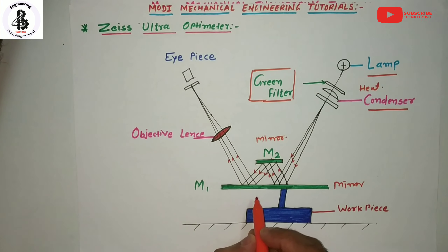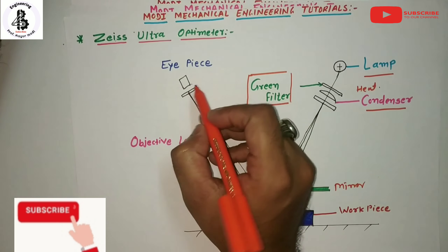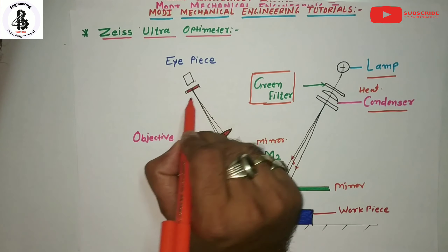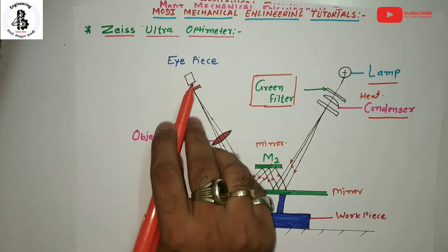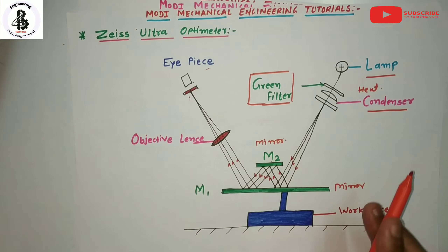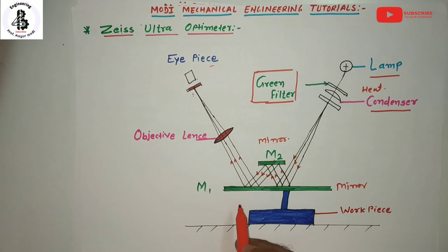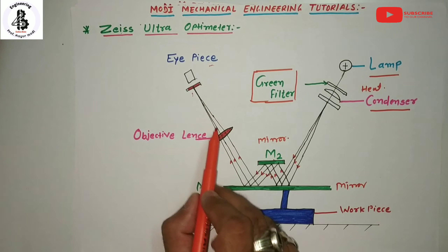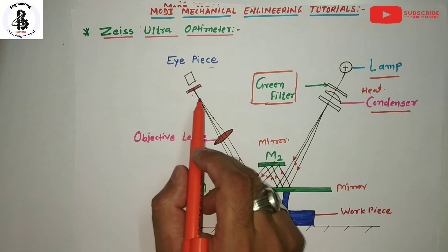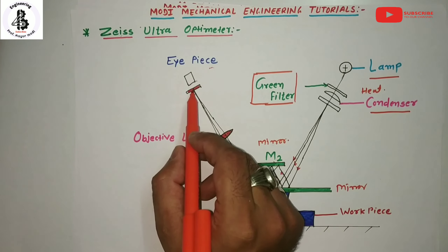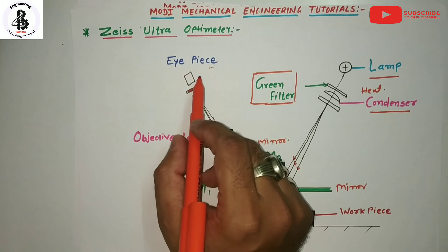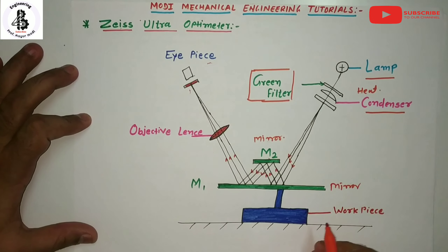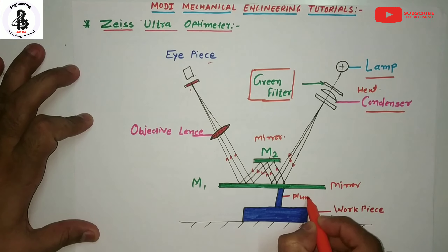The objective lens brings the reflected beams from the first mirror to focus at the transparent graticule, which contains a precise scale. This is viewed from the eyepiece. The reflected rays from M1 pass towards the objective lens, focusing at the graticule, and you can easily take readings from this eyepiece lens.